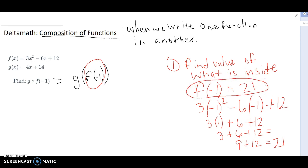That is what is going to go inside of here. We're going to replace that in there. So now we're going to have g, not f of negative 1, but g of 21. And now we're going to plug that into our g of x function. So that's going to be g of 21 equals 4 times 21 plus 14.